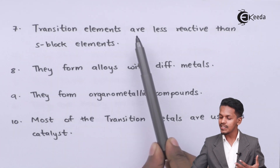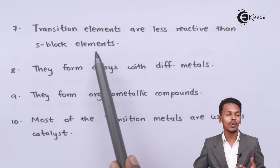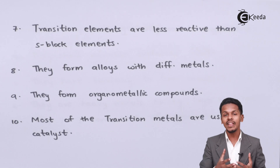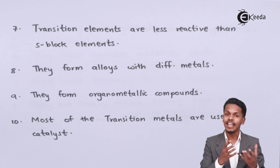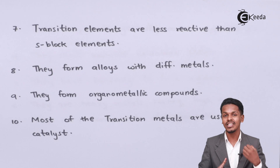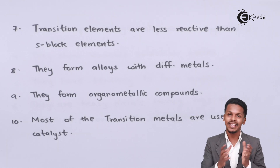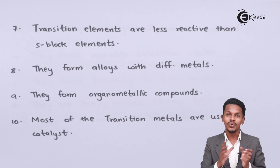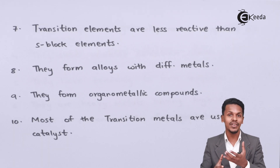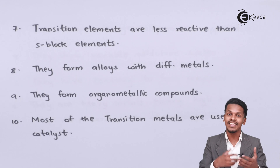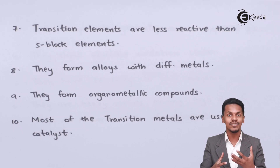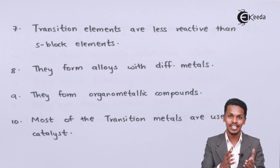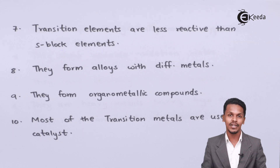Transitional elements are less reactive than S-block elements. The reason is ionization enthalpy — the ionization enthalpy of S-block elements is very much less, so their electrons can be lost very easily. But for transition elements, losing the last electron is much more difficult, making D-block elements less reactive compared to S-block elements.